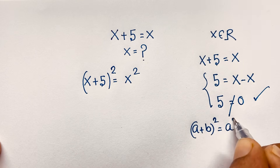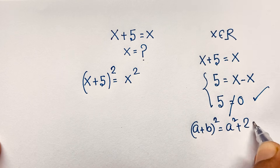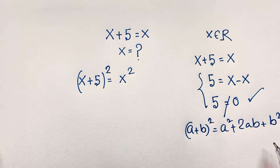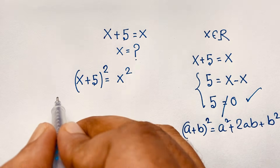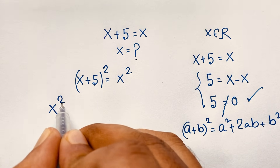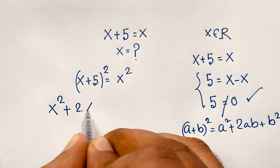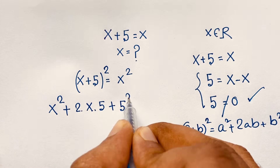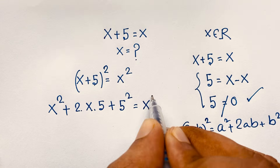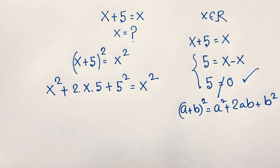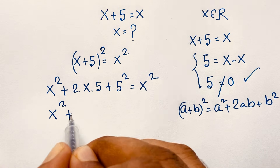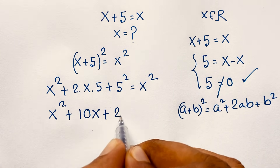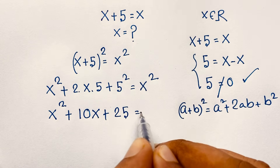Using the (a + b)² formula — a² + 2ab + b² — and applying it to our expression, we get x² + 10x + 25 is equal to x². Now the x² terms cancel out on both sides, and we are left with 10x + 25 is equal to 0.